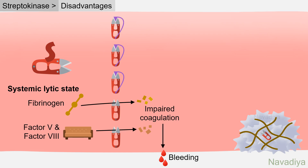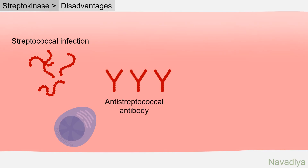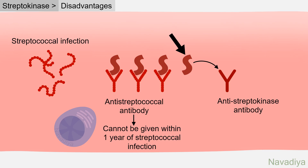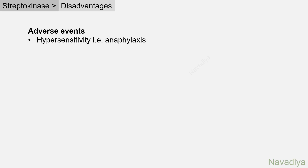Streptokinase increases the risk of hemorrhage. Another disadvantage: if a patient had a recent streptococcal infection, they may have developed anti-streptococcal antibodies, which inactivate a large proportion of streptokinase and reduce its efficacy. So it cannot be used within 1 year of streptococcal infection. Moreover, streptokinase is itself antigenic, so anti-streptokinase antibodies develop within days, meaning subsequent doses may not work. Once used, it cannot be repeated from 5 days to 1 year afterward. Other adverse events include hypersensitivity reactions such as anaphylaxis and arrhythmia. Because of these disadvantages, streptokinase is rarely used now.